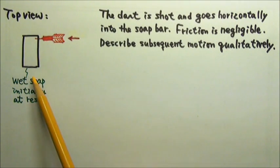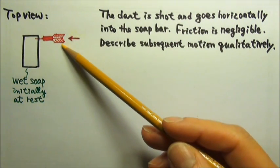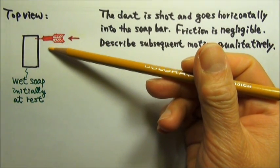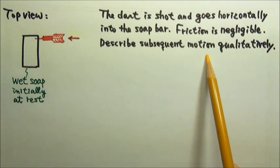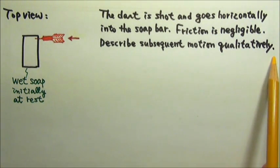This is the top view of a rectangular bar of wet soap initially at rest on a horizontal surface. A dart is then shot and goes horizontally into the soap bar. Friction is negligible. Describe the subsequent motion of the dart soap bar system qualitatively.